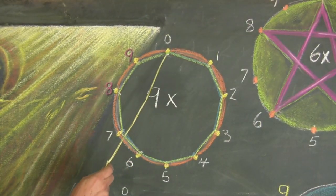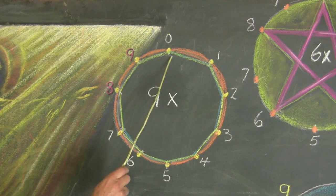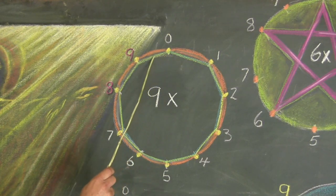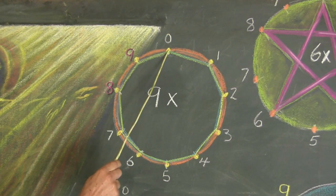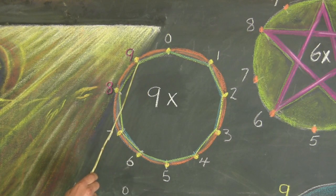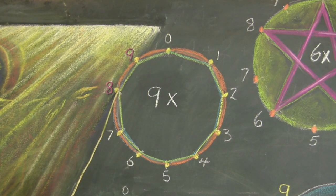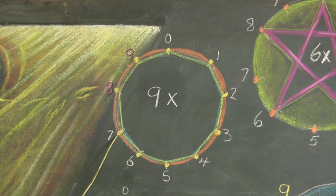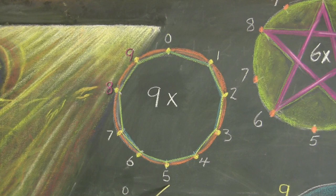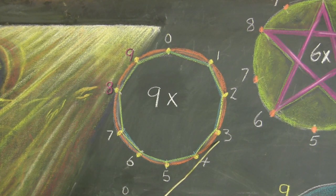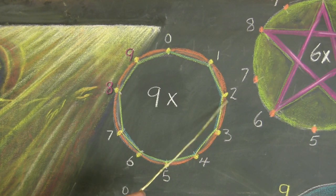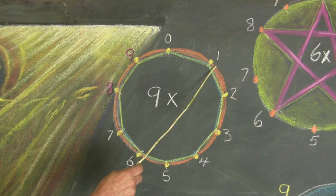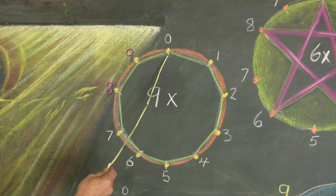And the same circle will show us the nine times tables. Instead of going clockwise, we're going back this way. So zero times nine is zero, one times nine is nine, two times nine is eighteen, three times nine is twenty-seven, four times nine is thirty-six, five times nine is forty-five, six times nine is fifty-four, seven times nine is seventy-three, eight times nine is seventy-two, nine times nine is eighty-one, and ten times nine is ninety.